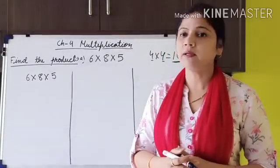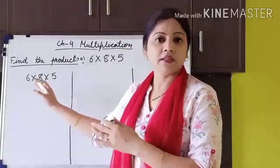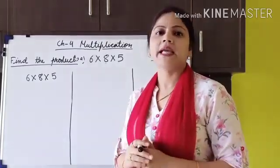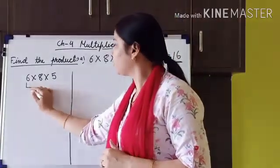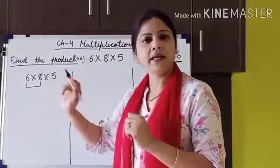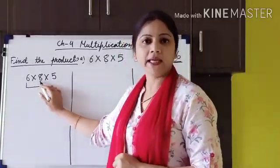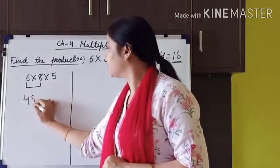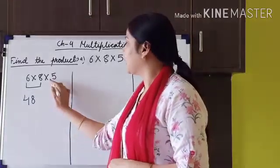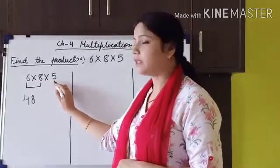How do we solve this problem? We cannot multiply all 3 factors together at once, so first we choose any 2. We start by multiplying the first 2 factors: 6 multiplied by 8. After multiplying 6 by 8 we get 48 — 6 eights are 48. We have found the product of these 2 factors, but we still need to multiply by the third factor.